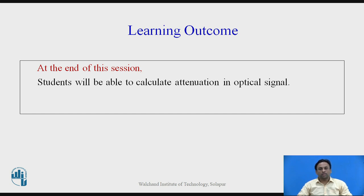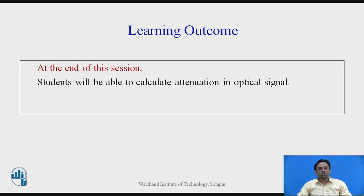In the previous lecture, we covered losses due to scattering. There are two major categories: linear and non-linear scattering. In the linear scattering, we have seen Rayleigh and Mie scattering. In the non-linear, we have seen SRS — stimulated Raman scattering — and Brillouin scattering. Due to these, data is lost whenever there is transmission through an optical cable. Theoretically, if we go on increasing the wavelength, Rayleigh scattering becomes less.